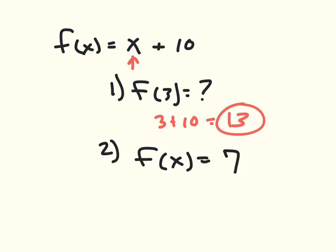On the other side of the coin, I could give you something like number 2, which is f(x) = 7. So in this case, we're going to need to find out what is x. So we essentially know that f(x) equals 7, which means that 7 = x + 10. So x has to be equal to negative 3.